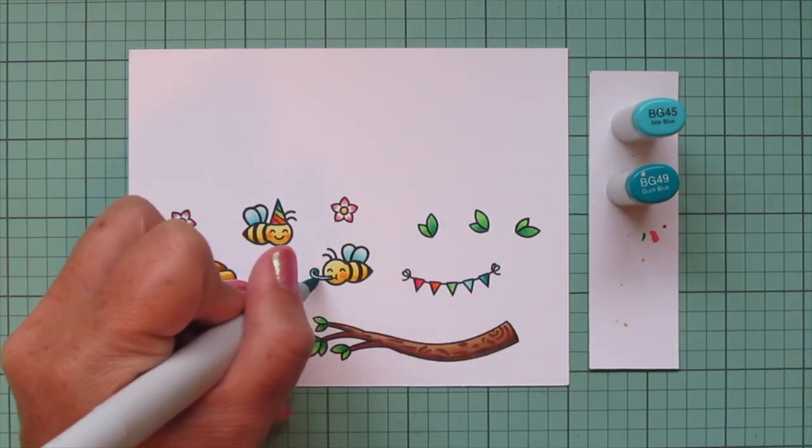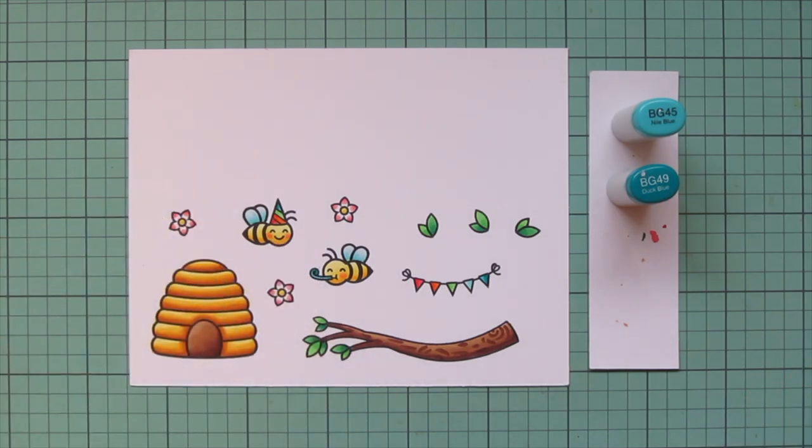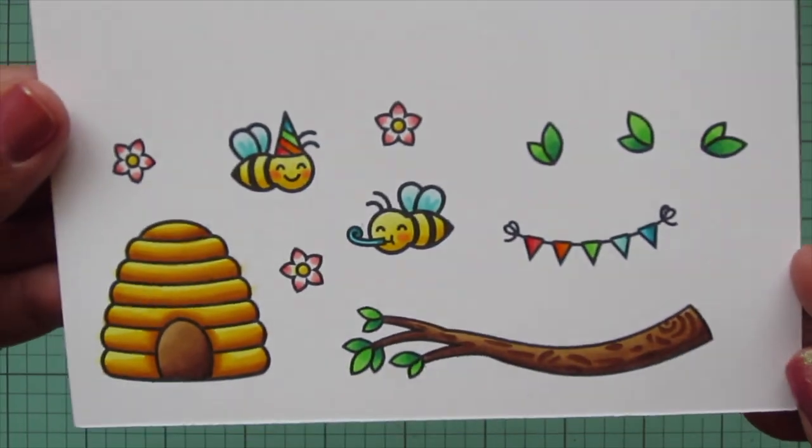For my last shades, I used BG45 and BG49, and then I trimmed all of these images out with their matching dies.